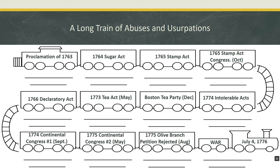Since Parliament couldn't identify the specific perpetrators, they decided to punish everyone. The form of collective punishment came as a series of four acts known as the Coercive Acts or Intolerable Acts. These closed the port of Boston, dispatched British soldiers to Massachusetts, required the quartering of troops often in private homes, and — most significantly — replaced the democratic assemblies of Massachusetts with a Crown-appointed governor and assembly. The Crown had completely stripped an entire colony of its local sovereignty and independence, which it had enjoyed for over a century.